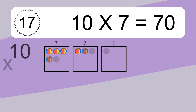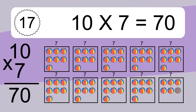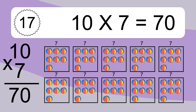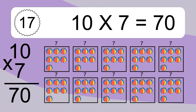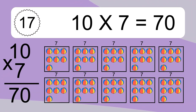10 times 7 equals what? 10 times 7 equals 70. We have 10 boxes, and each box has 7 colorful balls inside. If you count all the balls in all the boxes together, you will have 10 times 7 balls. This equals 70 balls.